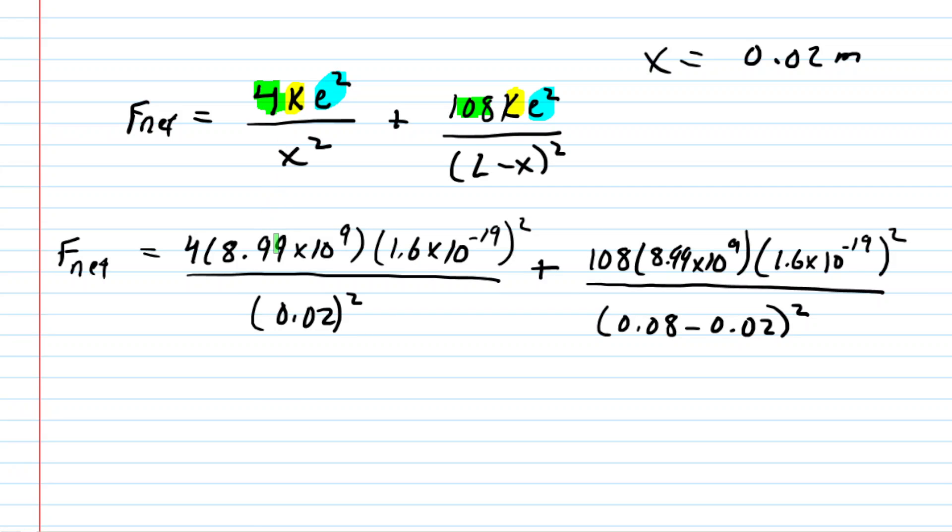So all the values have been plugged in. Note that k has a value of 8.99 times 10 to the power of 9, and e has a value of 1.6 times 10 to the negative 19. Also note that we changed L from 8 centimeters into 0.08 meters, again by moving that decimal twice to the left. So just make sure you plug in all those values correctly. When you do this, you get a net force of approximately 9.21 times 10 to the power of negative 24. We've plugged in all standard units, so the answer would be in newtons. So this is the correct answer to part B.